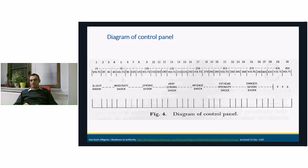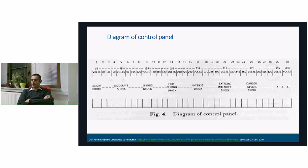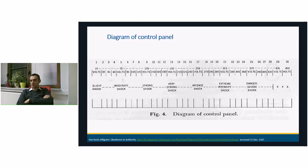This is the control panel — it goes from 15 volts to 450 volts. At 15 volts it is a slight shock, 75 volts is moderate shock, 135 is strong shock, 150 is strong shock, 195 is very strong shock, and so on.